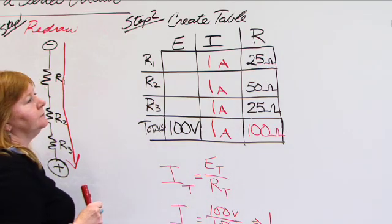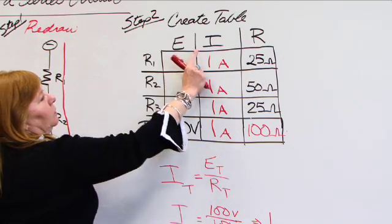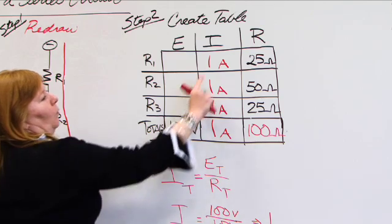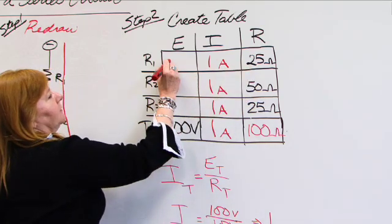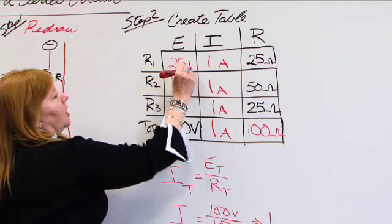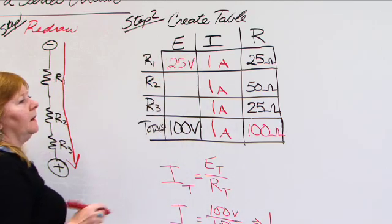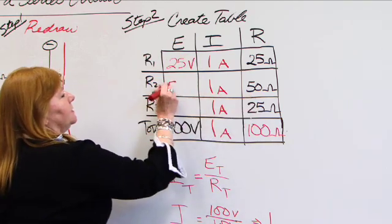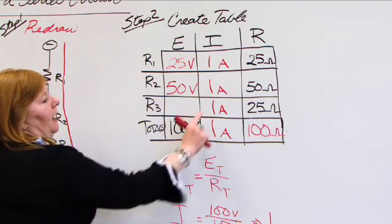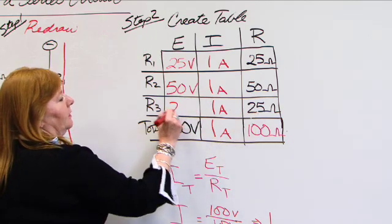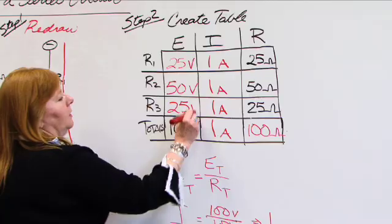Where E equals I times R. Let's go ahead and fill this in. 1 times 25 gives us 25, and now we're talking volts. 1 times 50 gives us 50 volts, and 1 times 25 here gives us 25 volts.